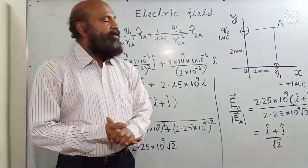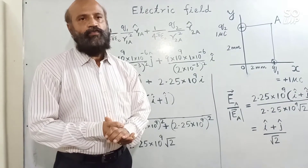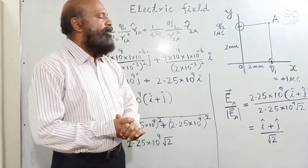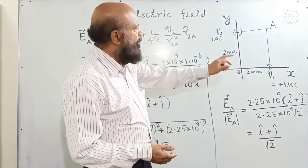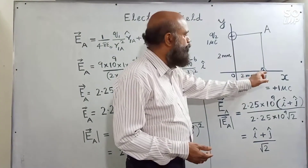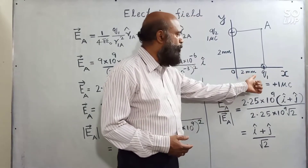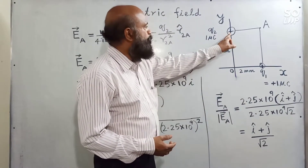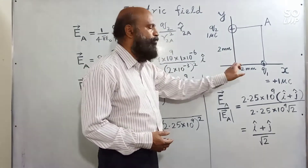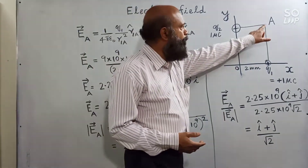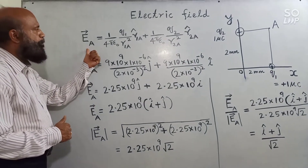We have completed the definition of electric field, how to find the electric field at a point due to a point charge, and also the superposition principle. Using these ideas, let us find the electric field at a point due to a configuration of charges. q1 is situated on the x-axis at a distance of 2 millimetres from the origin, and q2 is 1 microcoulomb, also situated at a distance of 2 millimetres from the origin. To find the electric field at point A, we use the superposition principle.